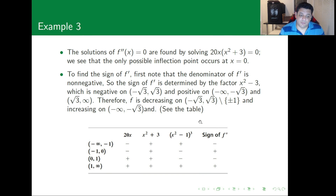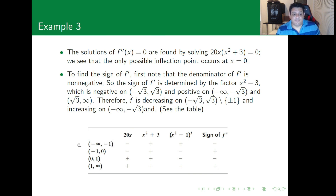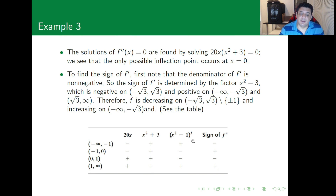For the second derivative, we examine 20x(x² + 3) divided by (x² - 1)³. Note that x² + 3 is always positive. The factor 20x is negative for x < 0 and positive for x > 0, while (x² - 1)³ is negative on (-1, 1) and positive outside that interval.